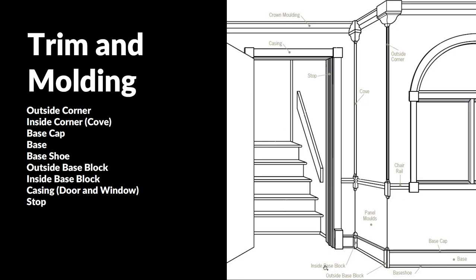Around doors and windows we have casing — that's the trim going around doors and windows. In an example where we have a door, you'll also have a stop so that it actually stops the door and gives something for it to rest on. We'll also see that above the base there's the ability to put paneling at various heights, and often there will be a chair rail in a traditional situation.